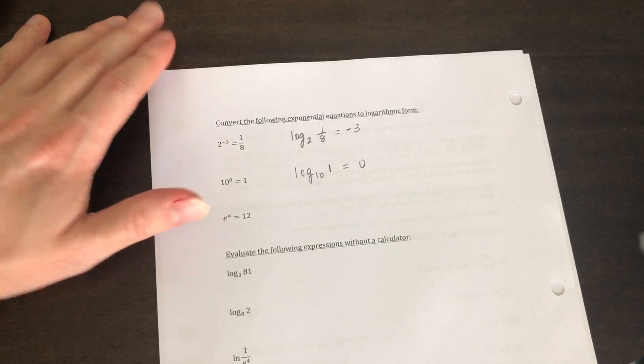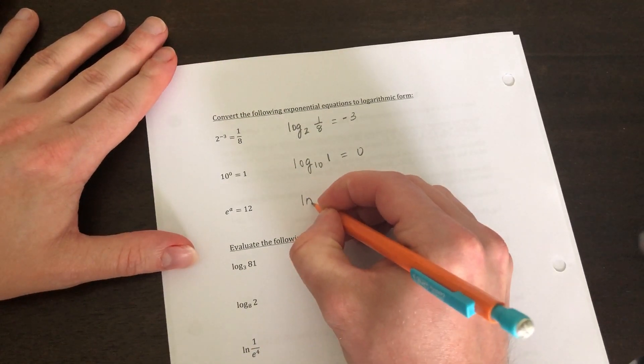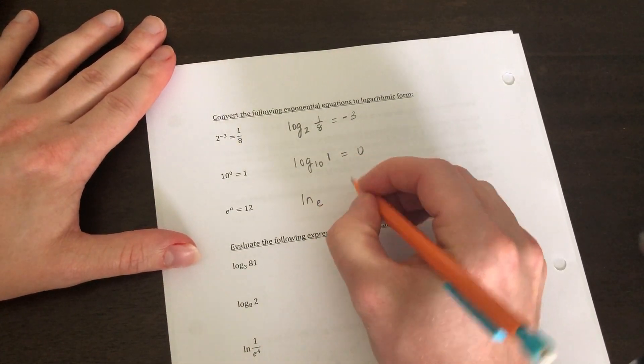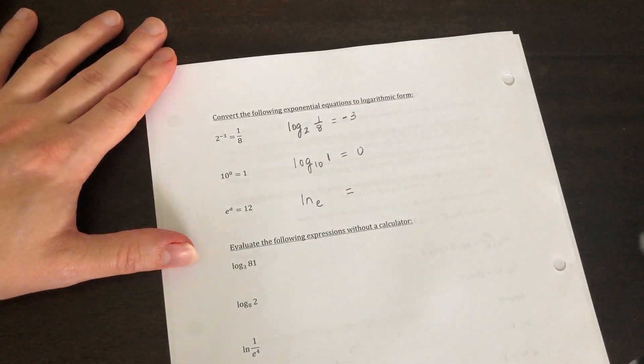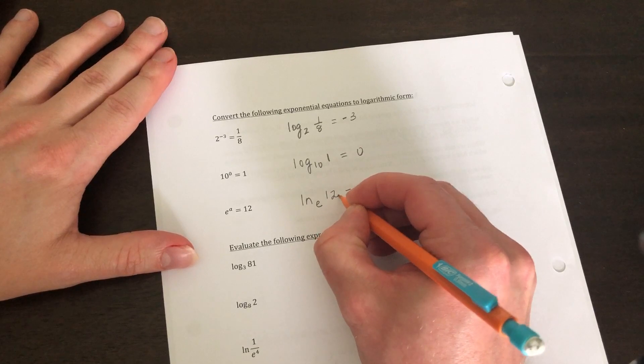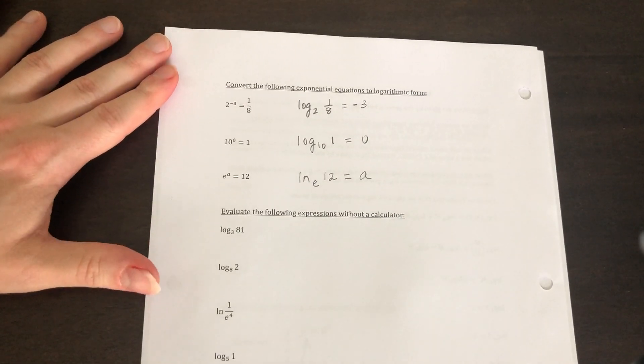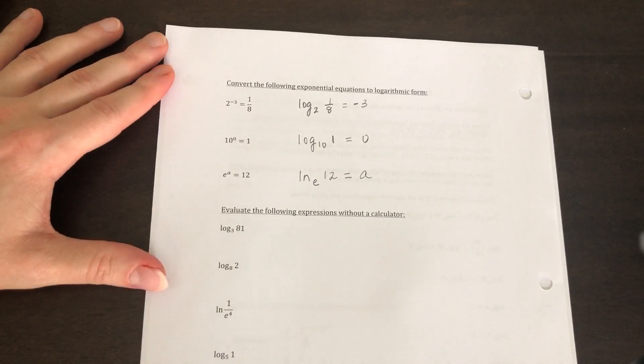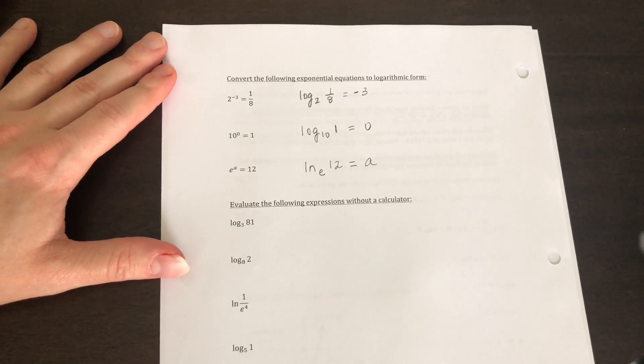And since I'm in base e, we're going to do natural log. So e to the a power is equal to 12. And that is how we do converting between exponential and logarithmic form.